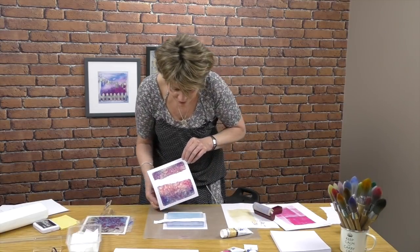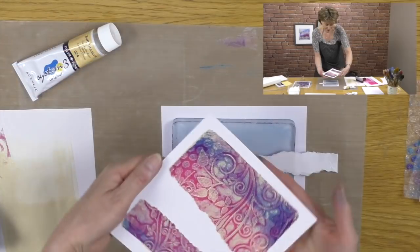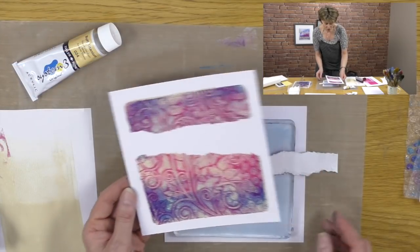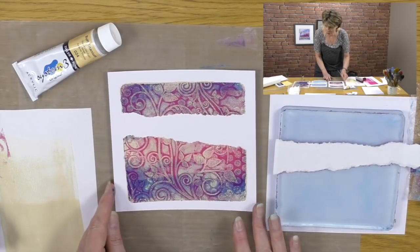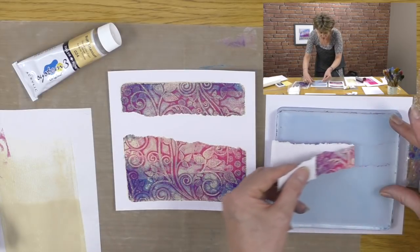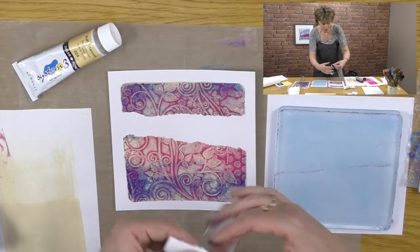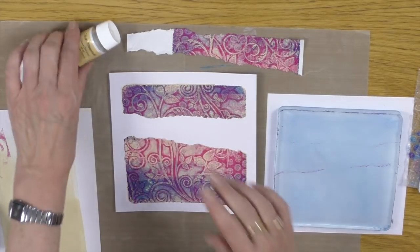We're going to peel this off like so. Look, I love it, love it when it works. We've got a really nice background with a tear through it, so it looks as if your print has actually got a serious tear going through it. Even the piece that we peel away looks quite nice too. I like that so much.